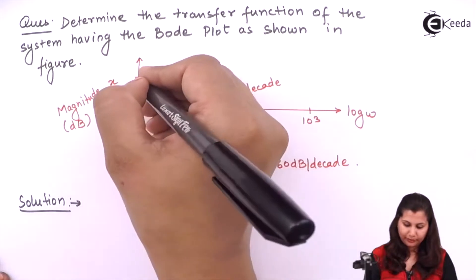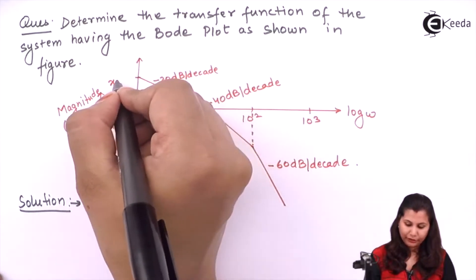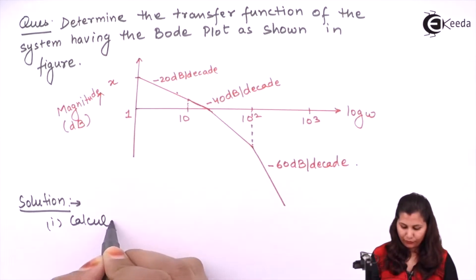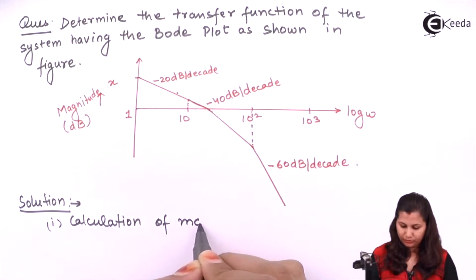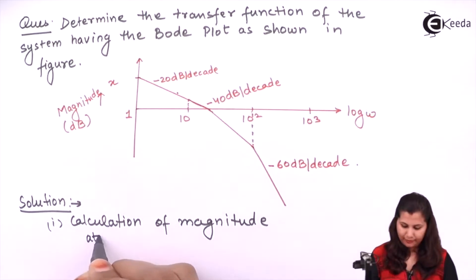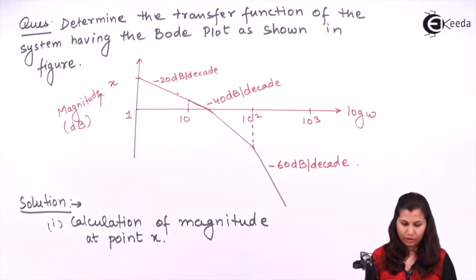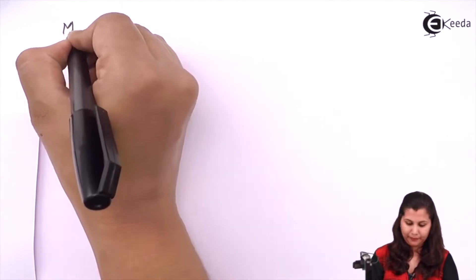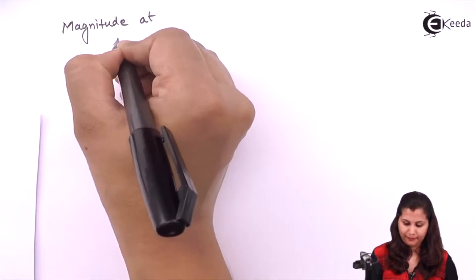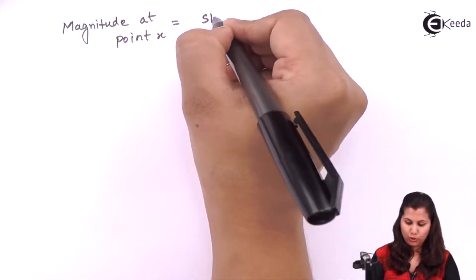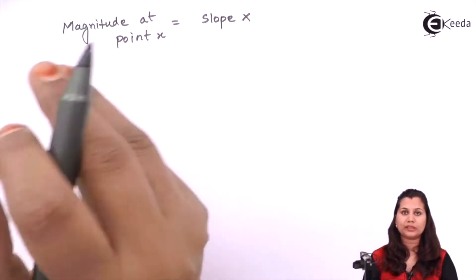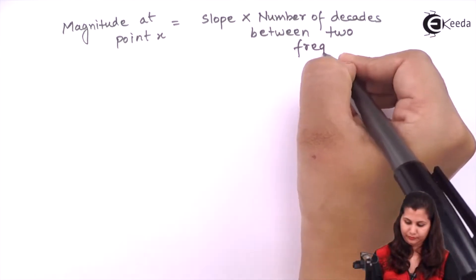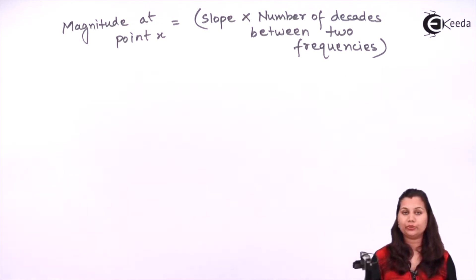First we will have to calculate the magnitude at point x, because no magnitude value is given there — it is just labeled as point x. So our first step is the calculation of the magnitude at point x. The formula is: magnitude at point x equals slope multiplied by the number of decades between the two frequencies.